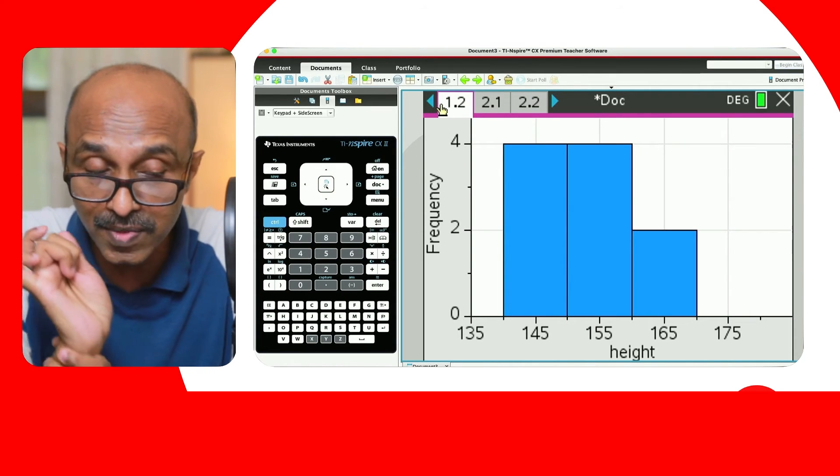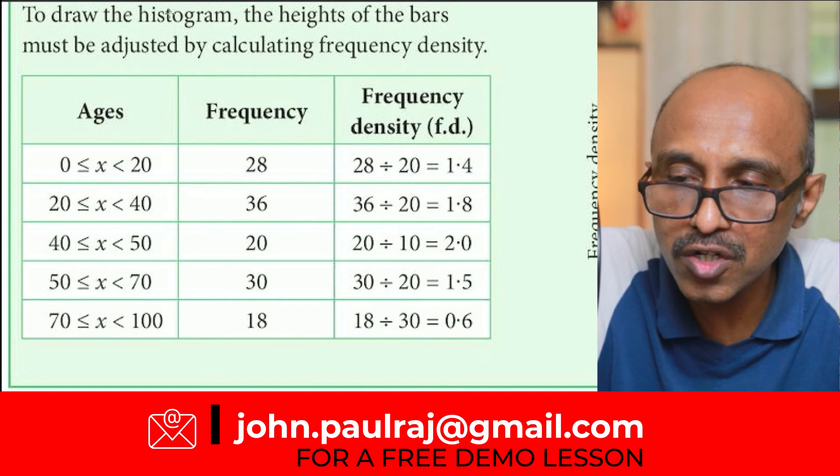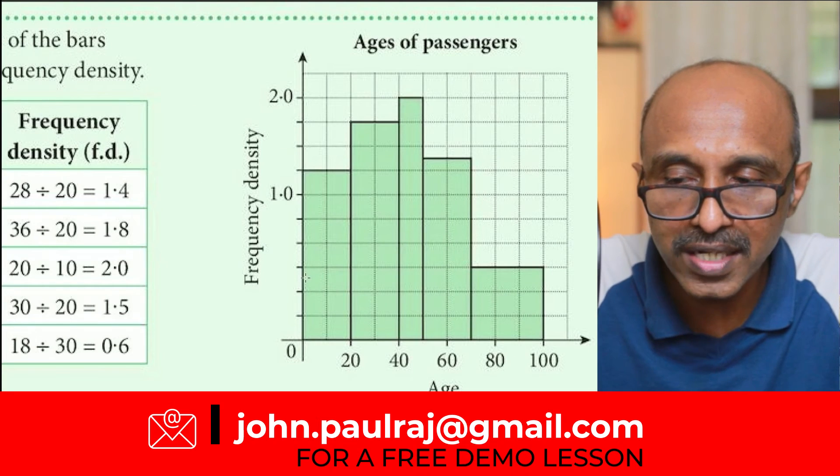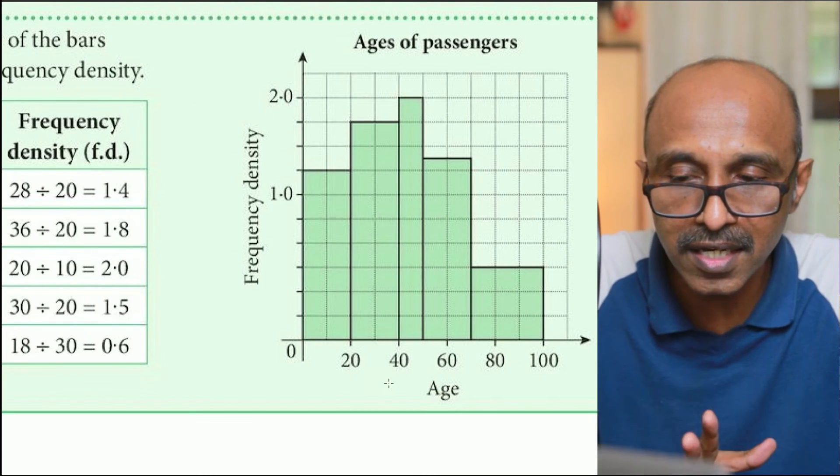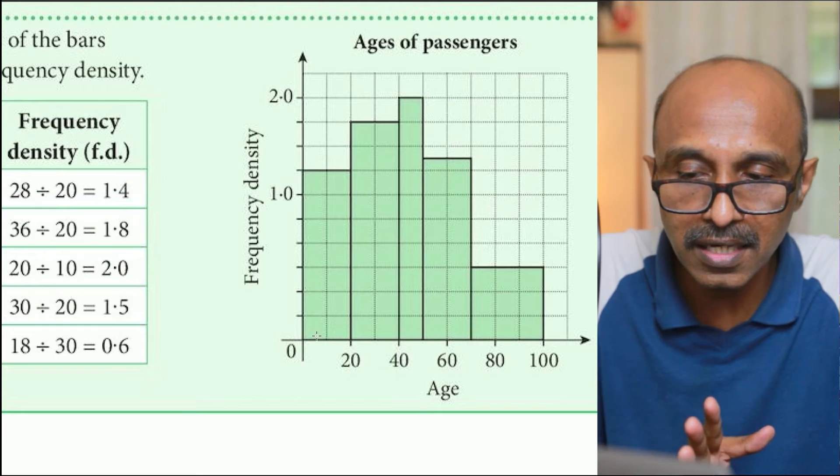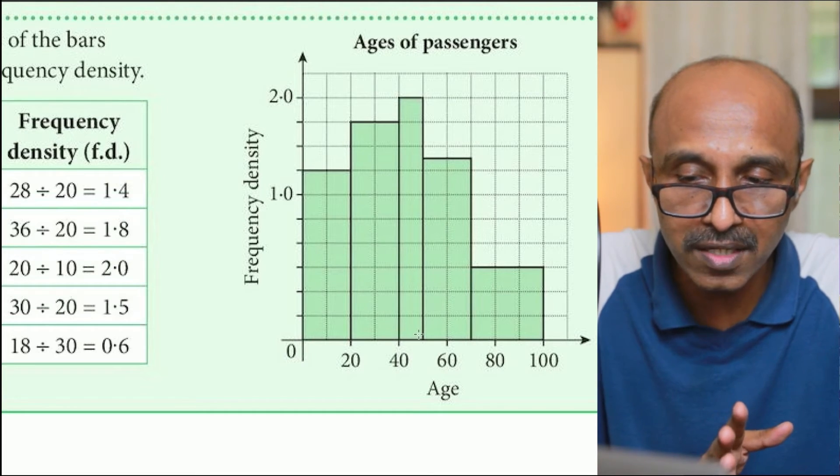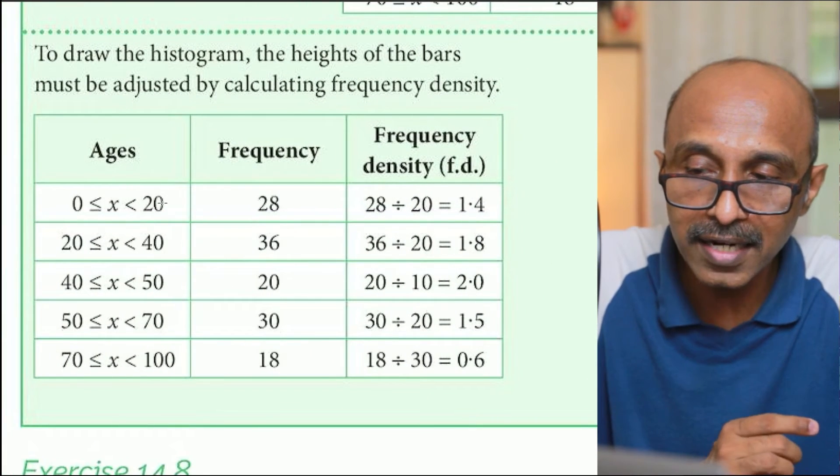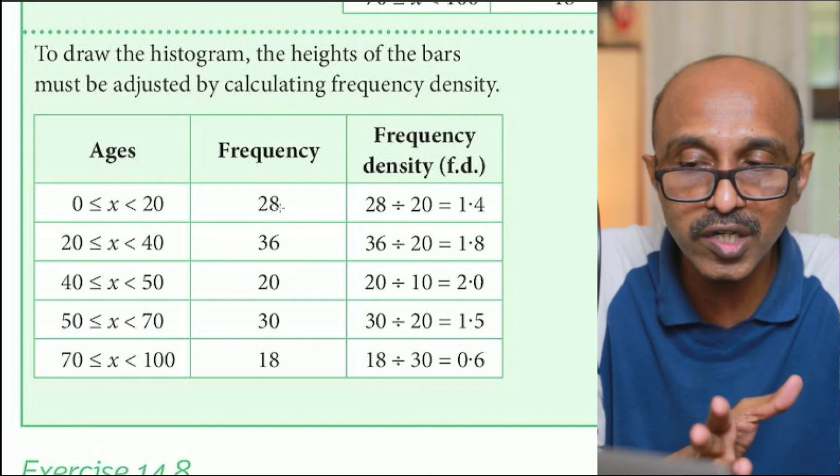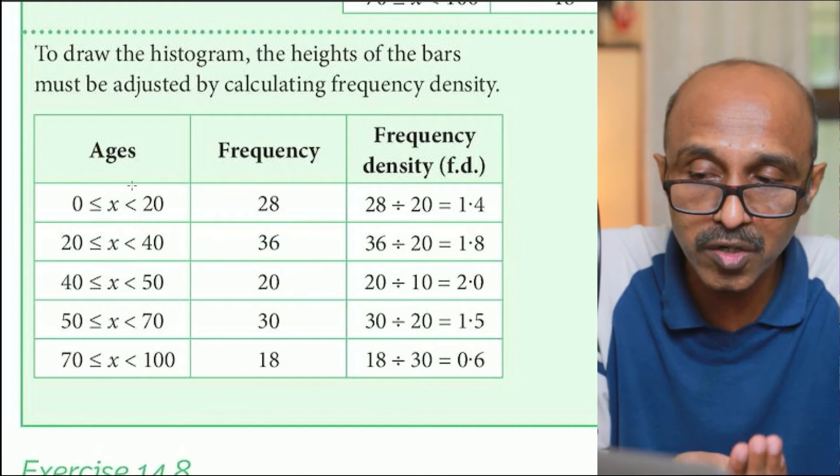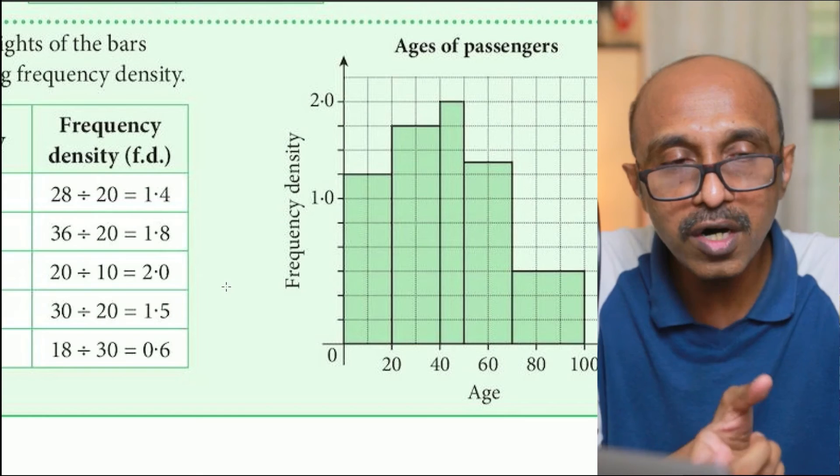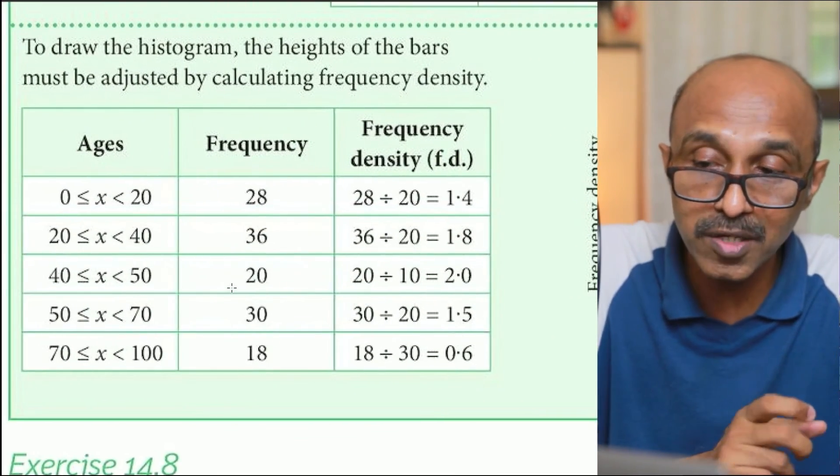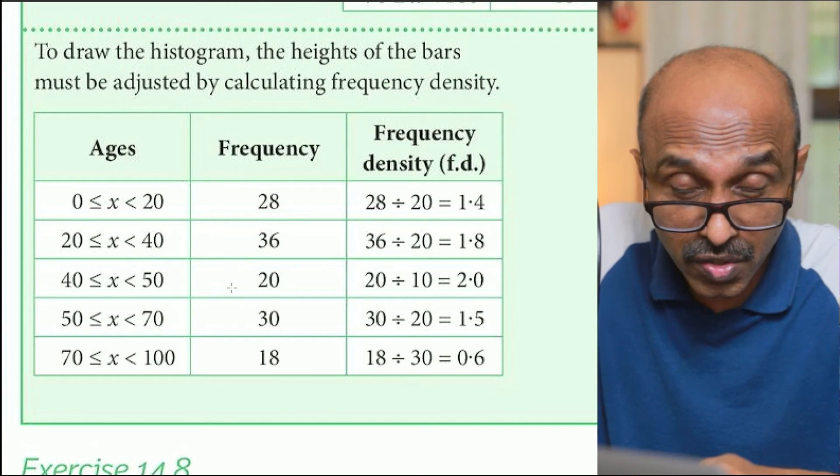Now this was all about histograms of equal bin size or equal class intervals, as we say sometimes. So here is an example of a question where you're asked to draw a histogram. This is already a worked out example, so we can verify our histogram. As you can see in this worked out example, the y-axis is frequency density, and each bin size is different. This is 20. This is 20. This one is 10 and that's 20 and this one is 30. And it's given as a grouped frequency distribution. You're given the frequency and you're given the groups from zero to 20, 20 to 40, so on and so forth. So how do we draw a histogram of unequal bin size or unequal class interval using the TI Nspire? What are you going to do? So I'm going to switch to the calculator screen and show you how to do this.